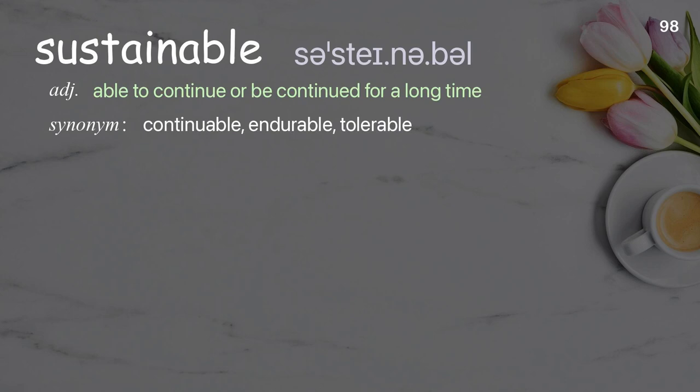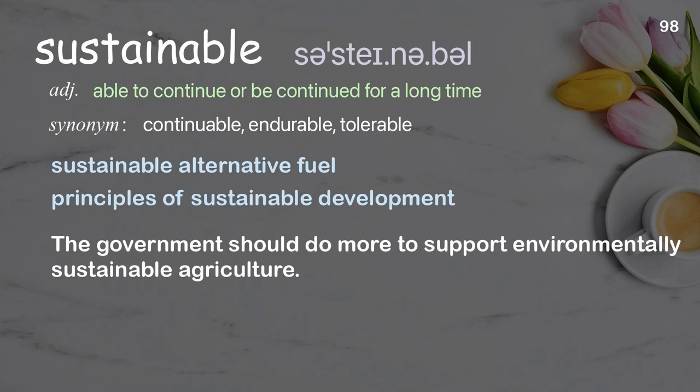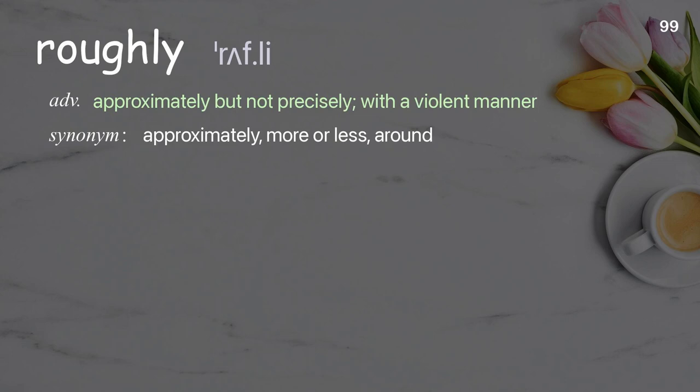Sustainable: Able to continue or be continued for a long time. Examples: sustainable alternative fuel, principles of sustainable development. The government should do more to support environmentally sustainable agriculture.